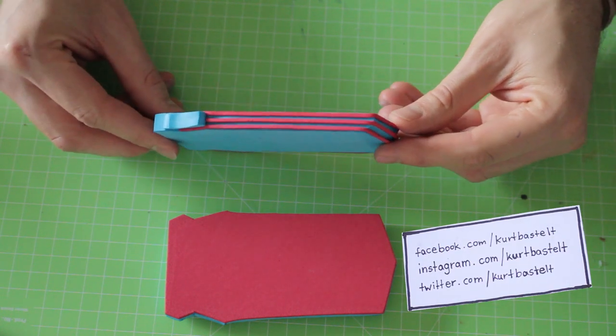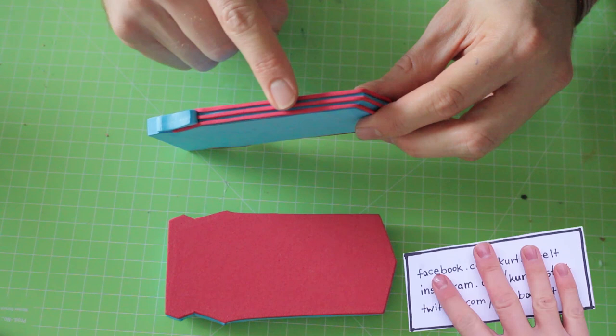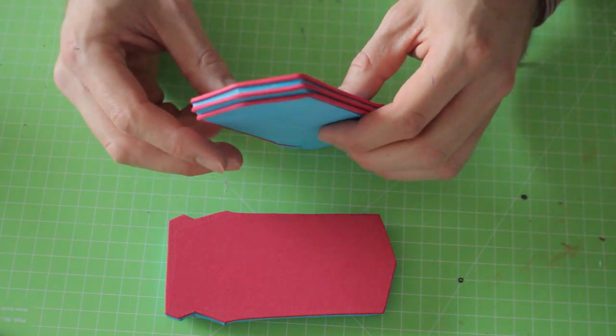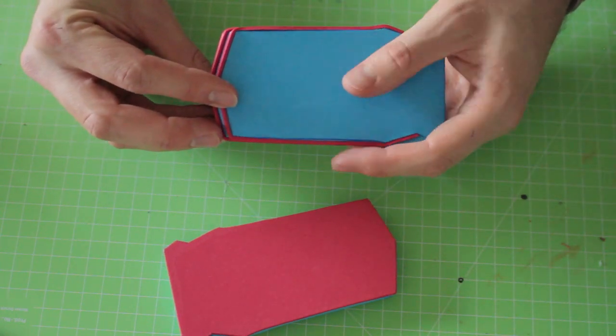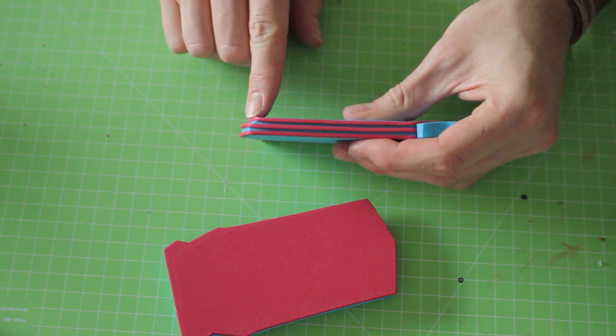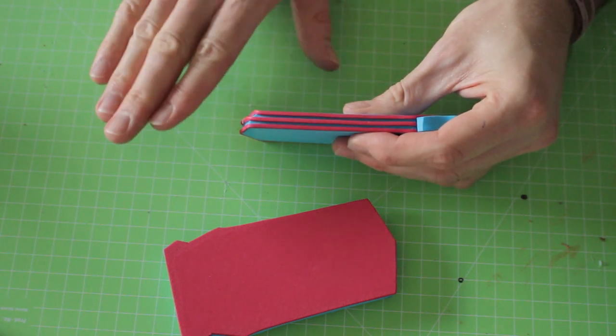I cut out the same shape out of 1cm foam again and remove some material in this area to also bevel it a bit. I added details using 2mm craft foam as well.